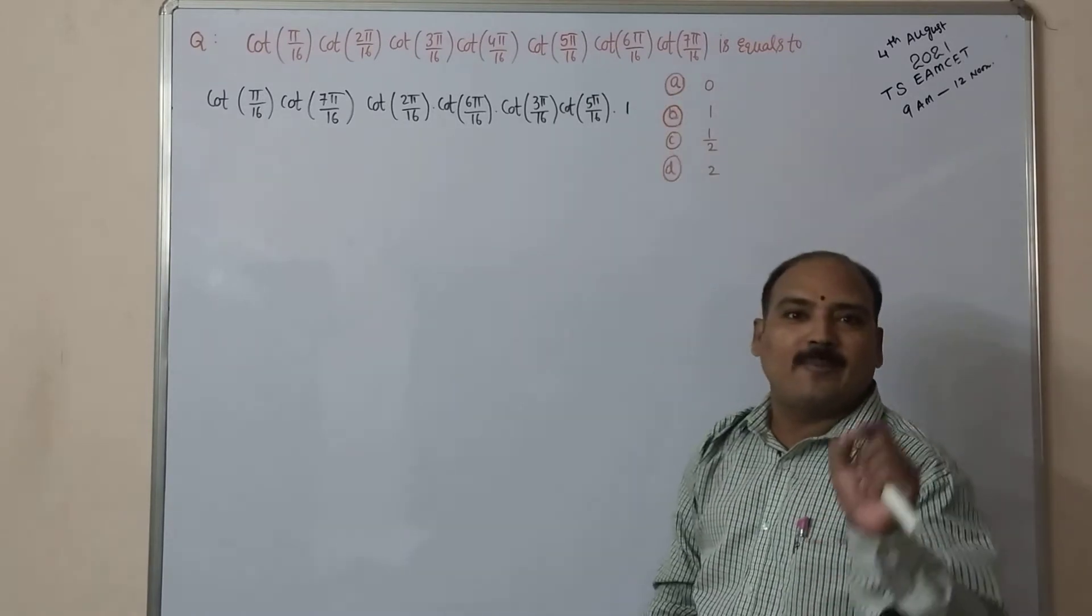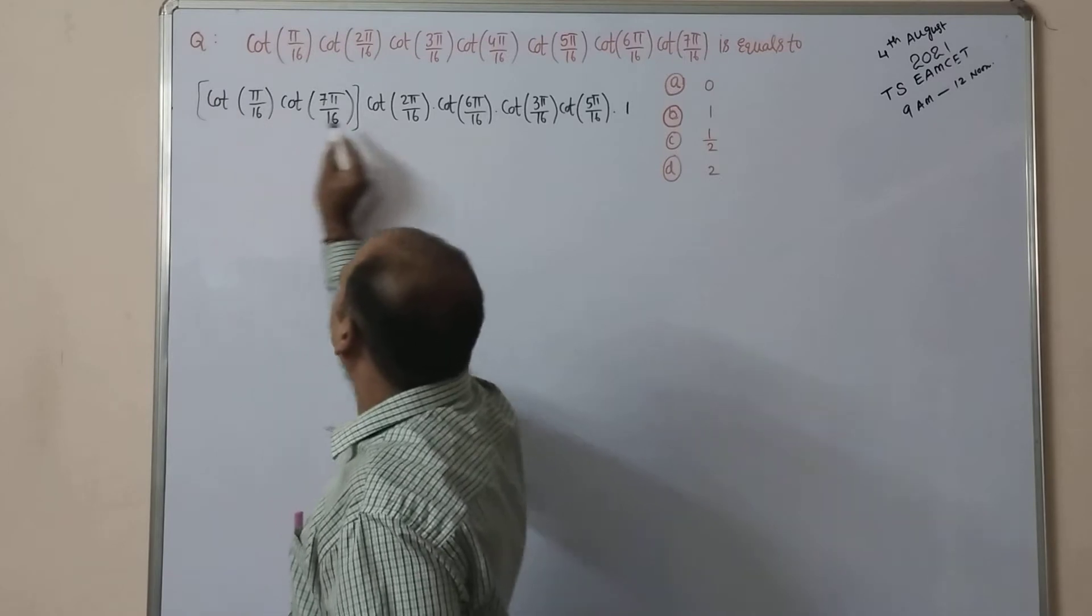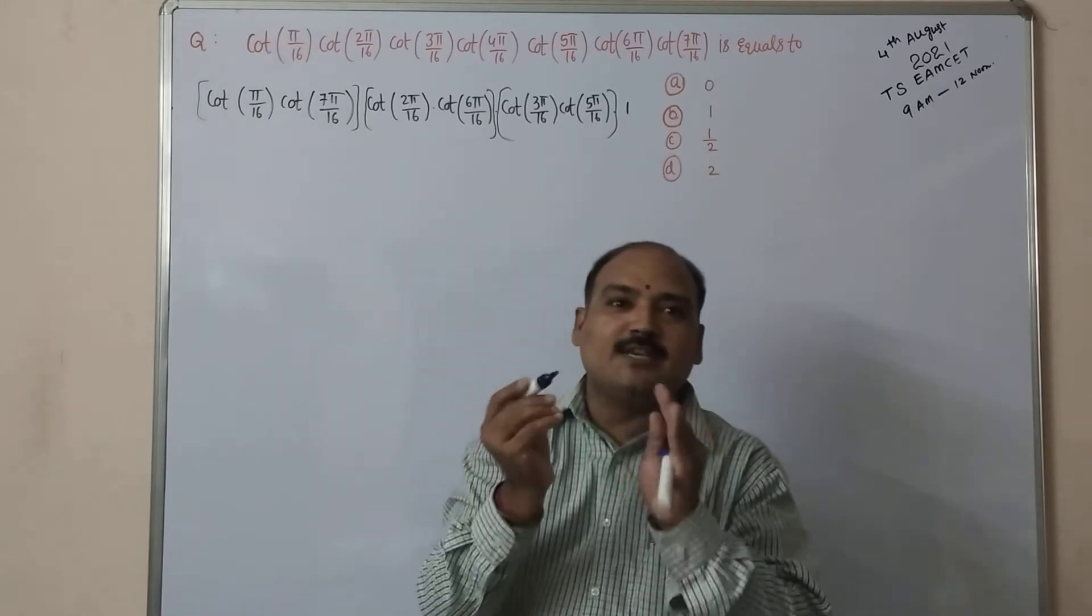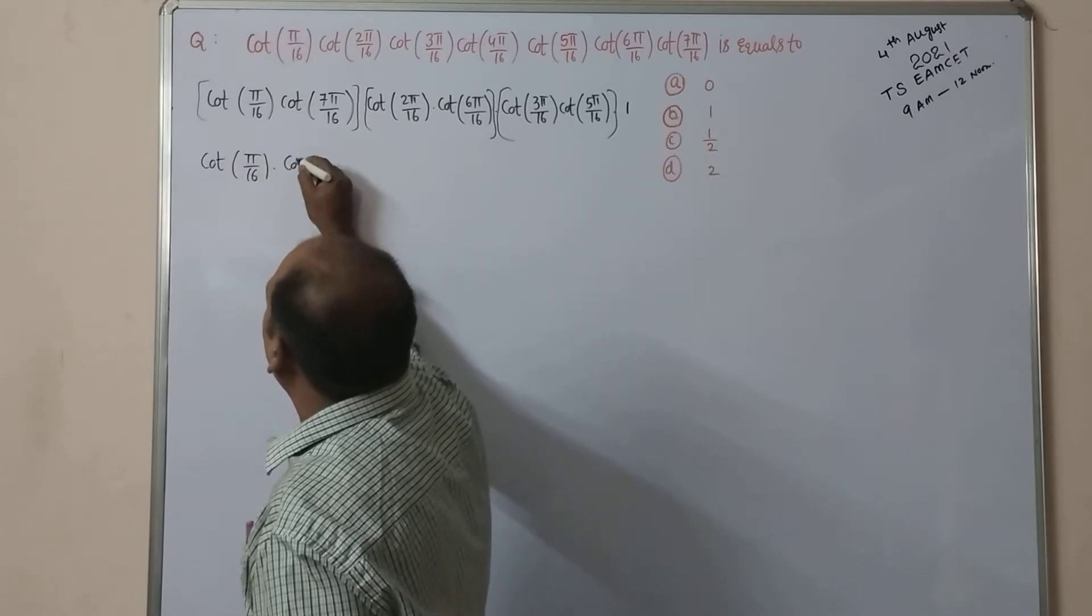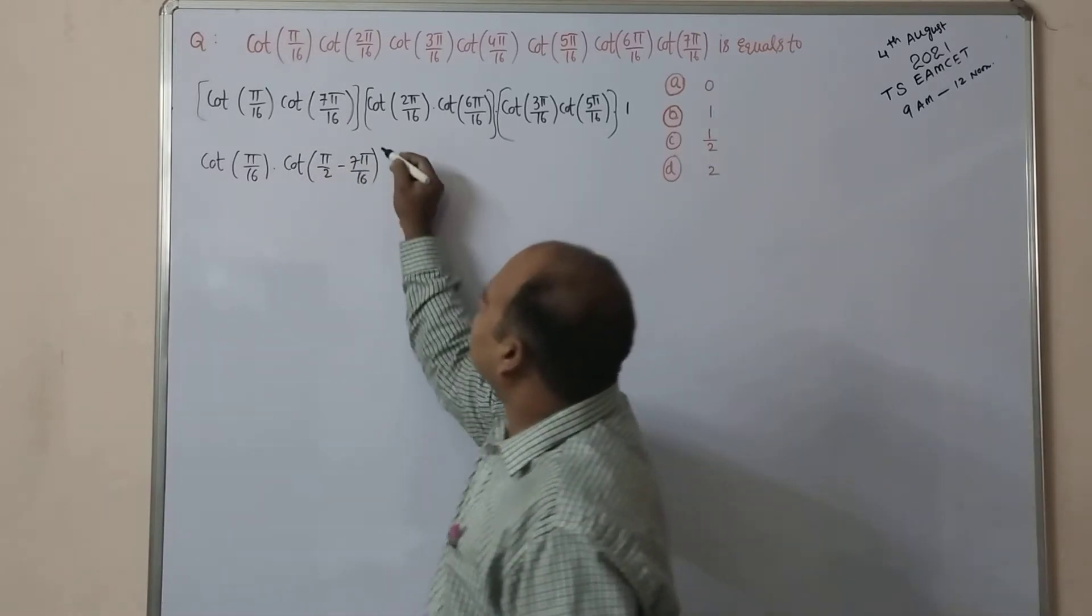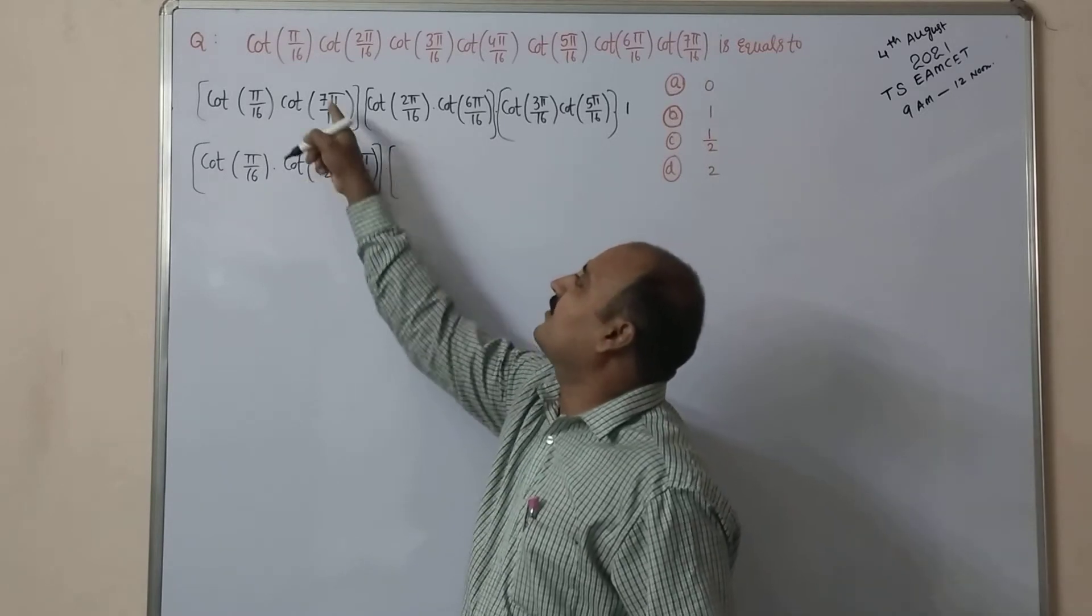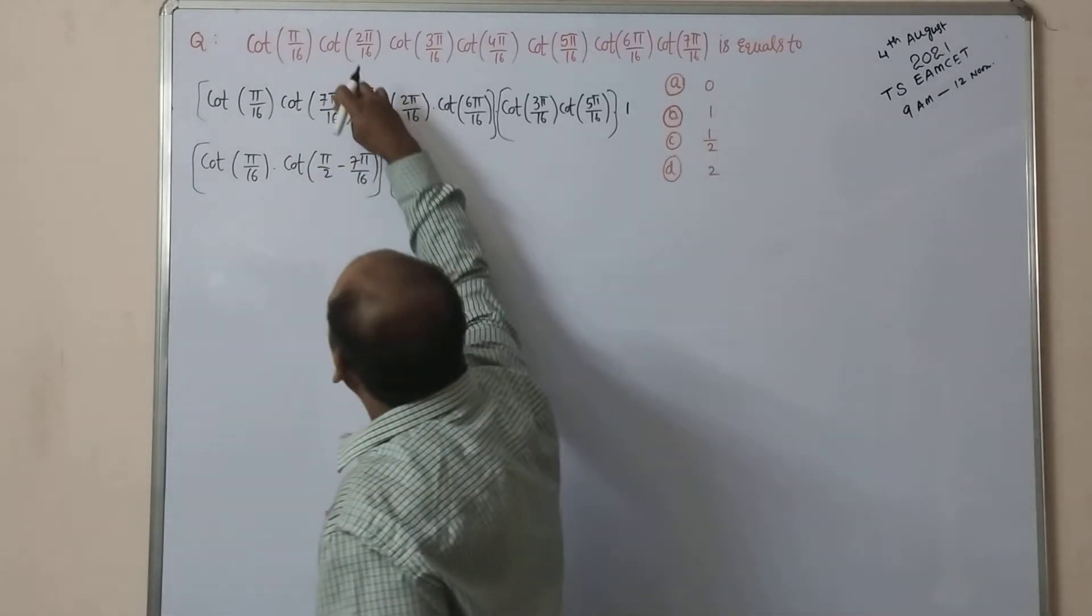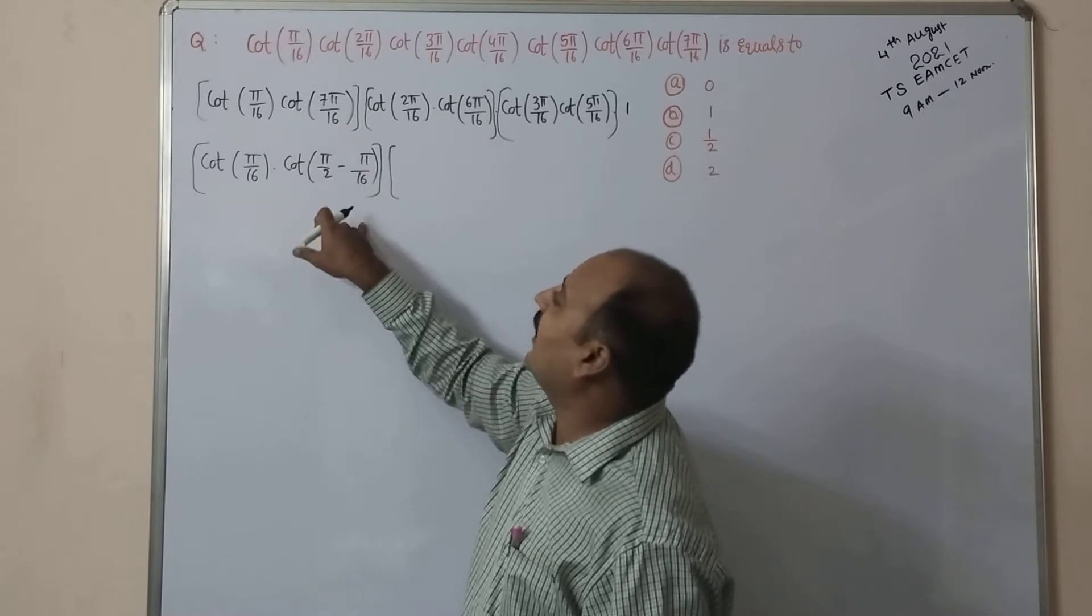So cot(π/16) into cot(7π/16), one pair completed. Next cot(2π/16) into cot(6π/16), another one cot(3π/16) into cot(5π/16), and cot(4π/16) value is 1. Cot(π/4) value is 1. Now 7π/16 can be written as cot(π/2 - 7π/16). Here LCM is 16, so 2×8 are 16, 8π minus 7π. So here π/2 minus 7π/16 - 2×8 are 16, 8π minus 7π, π/16 I want.